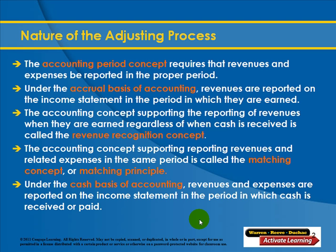On the other hand, under the cash basis of accounting, revenues and expenses are reported on the income statement in the period in which the cash is received or paid. This means that when we record the journal entry to bill the customer — a debit to accounts receivable and a credit to revenues — we do not actually report the revenue until the cash is received.